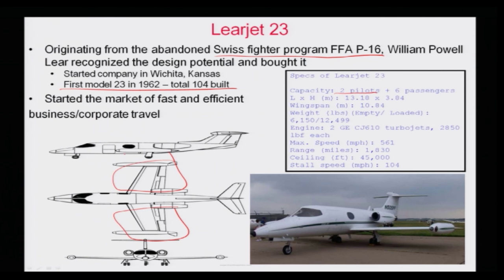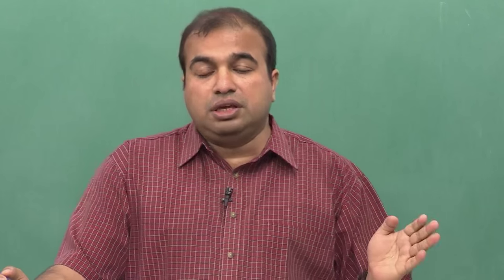The engines are built onto the body, shielded by the wings. It has a 10-plus meter wingspan, and General Electric started providing the engines for this aircraft. It flies at an altitude of 45,000 feet, has a range of 1,830 miles, and a maximum speed of 560 mph. The Learjet 23 created the business category called corporate travel using business jets, making it an important aircraft in the history of aviation.